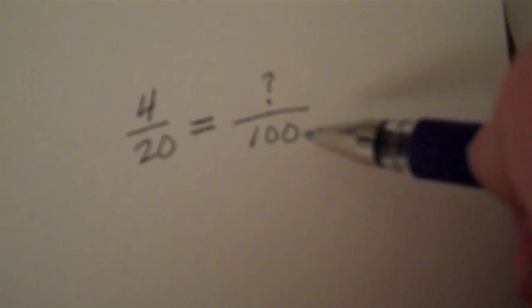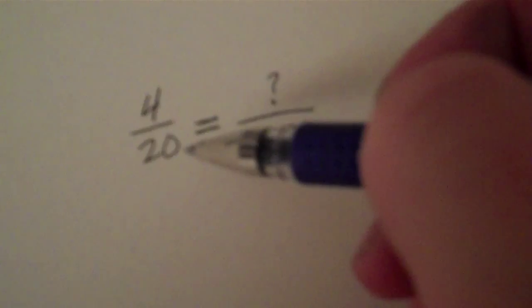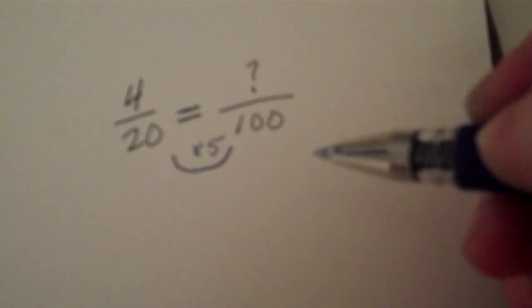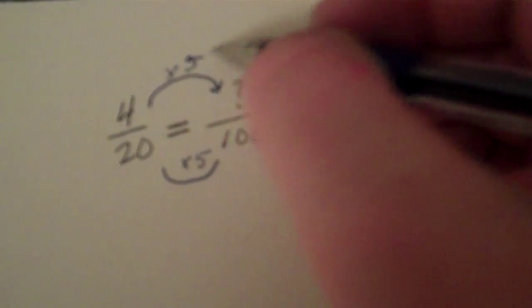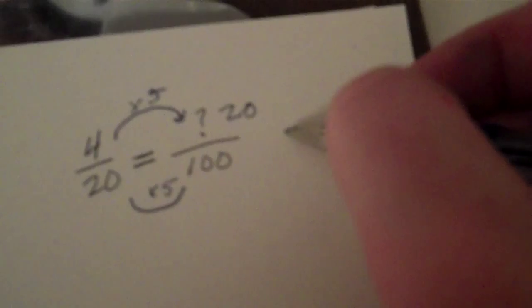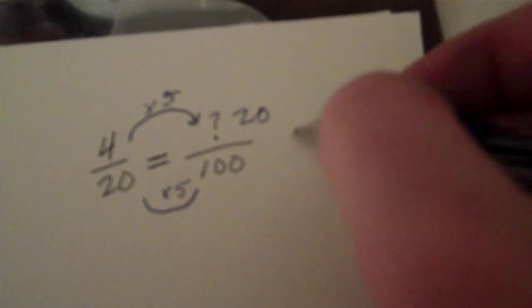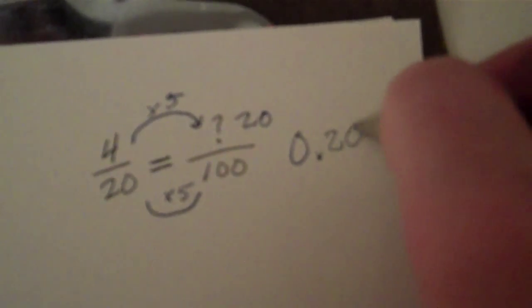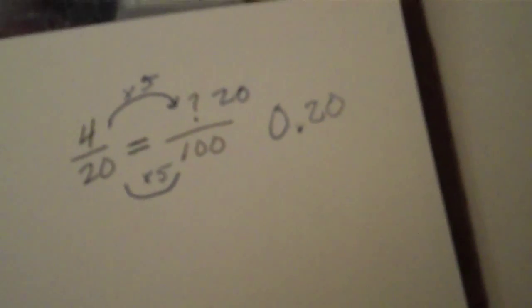Here's another example. Four twentieths! Terrifying! Except that we've got crazy fraction man! And he's gonna crush it into hundredths for us. How hard do I have to crush twenty to make it become a hundred? I think I have to crush it five times. That means I have to crush four five times. And I get twenty. This is twenty hundredths. Zero point two zero. Twenty hundredths. No problem!